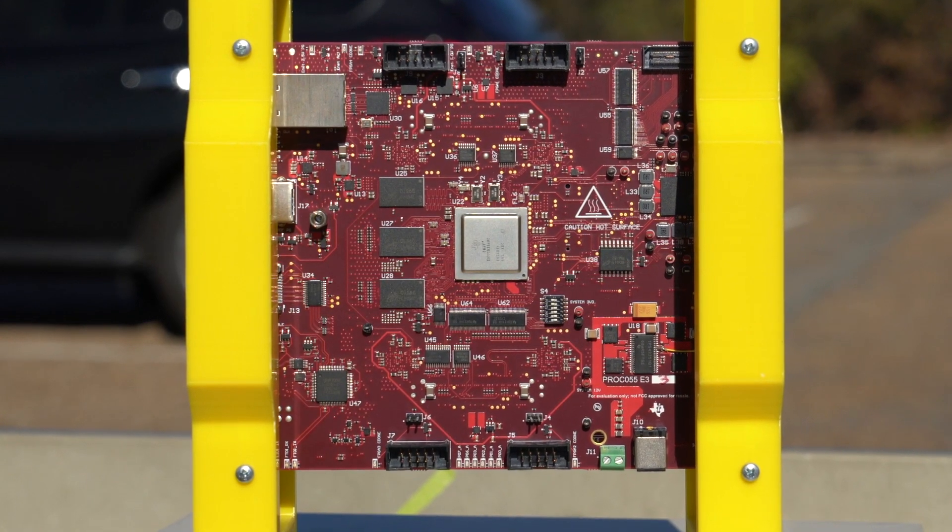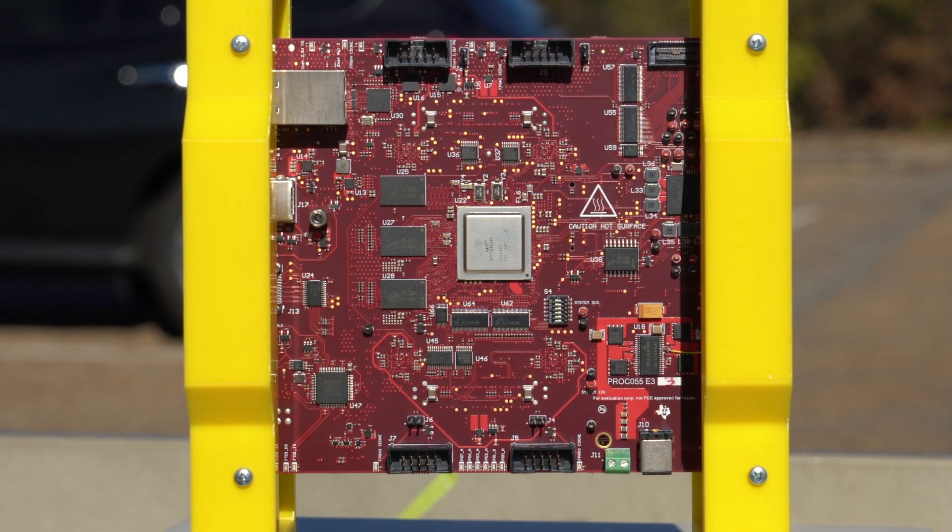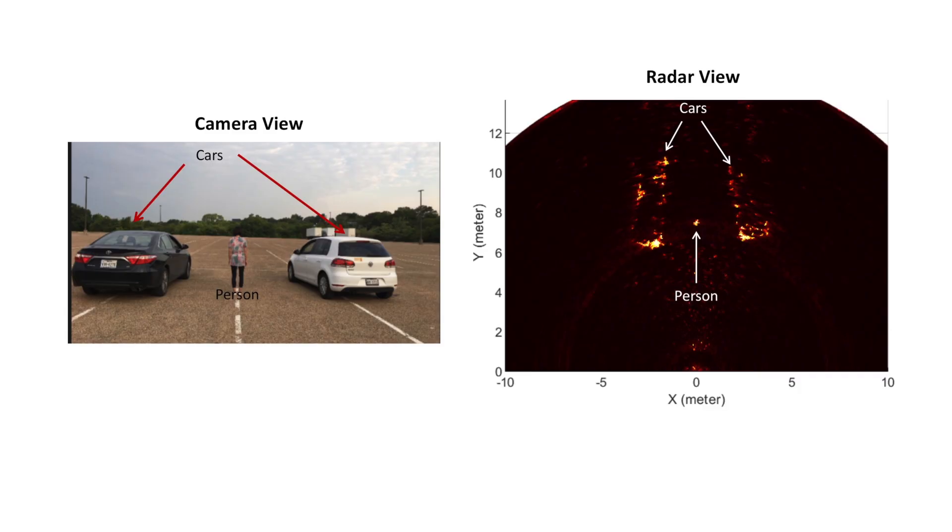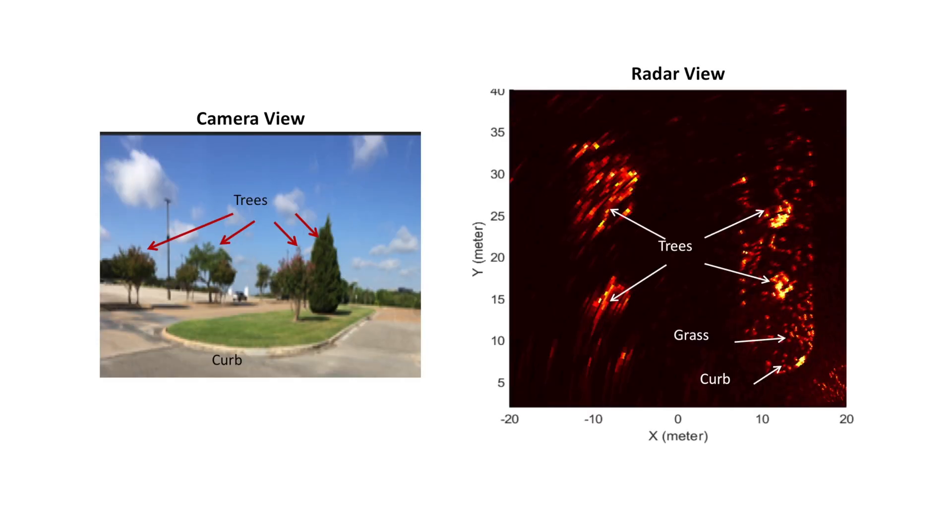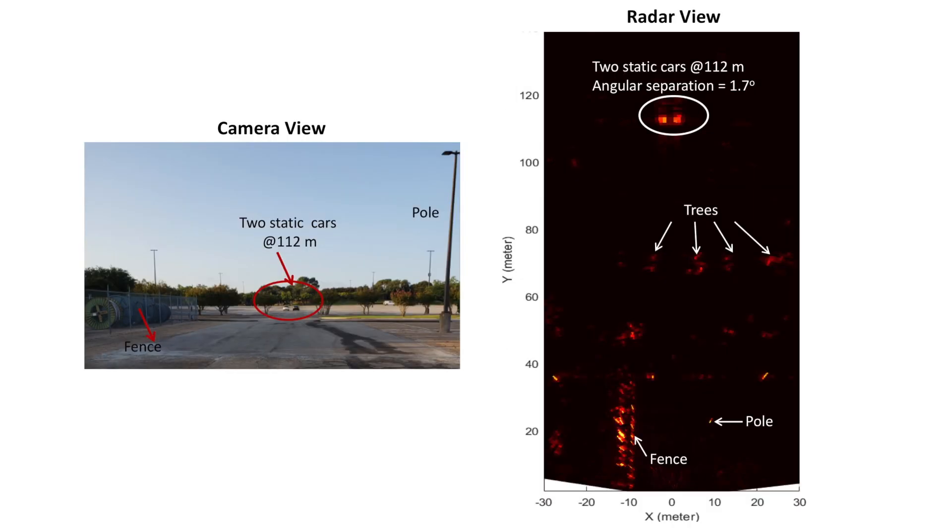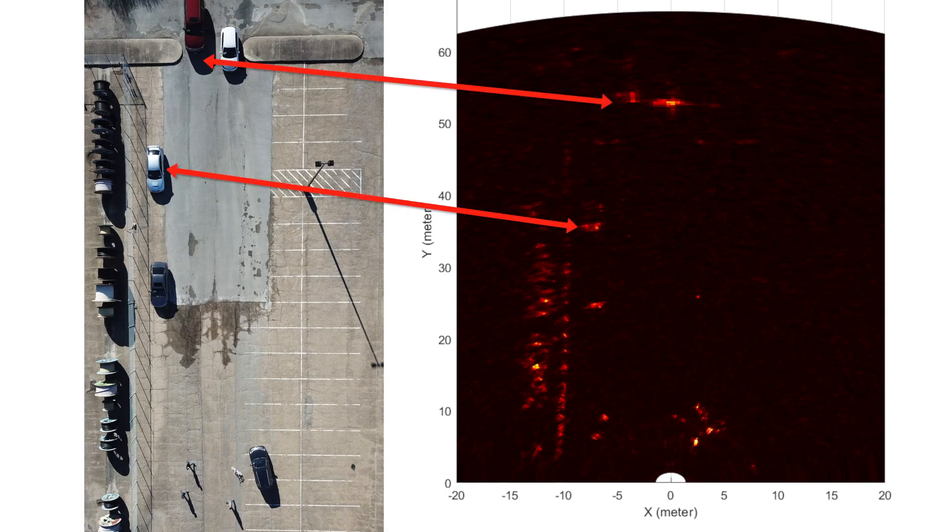This first demo shows the performance in MIMO mode, which can provide an angle resolution of 1.5 degrees in azimuth and elevation estimation capability. This mode can be applied when driving in a dense urban area and highway scene.